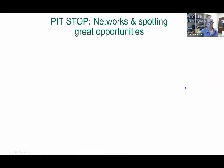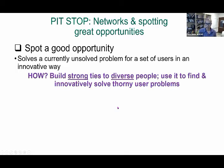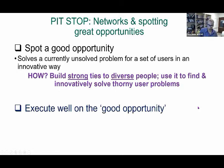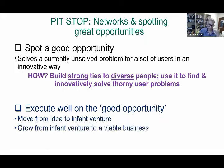To sum up so far: spotting a great opportunity means solving an unsolved problem for a set of users in an innovative way. You do that by building strong ties to diverse people and using those ties to find and innovatively solve thorny user problems. That's the first step of the entrepreneurial process. The second step is to execute well — move from idea to an up-and-running venture, then scale it up.